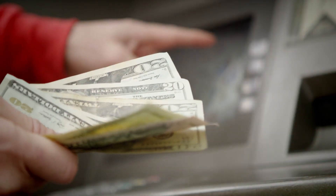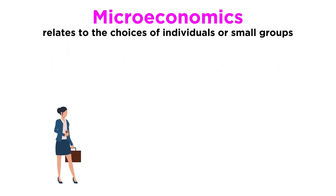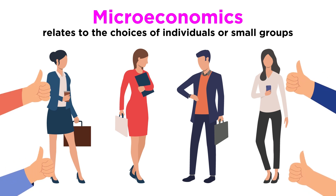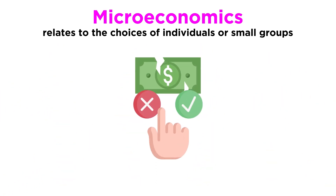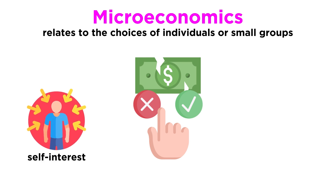So far in this series, we have been learning about microeconomics, which means we have been looking at the economy through the choices of individuals or small groups. Primarily, we have been examining how these choices can lead to positive results. Most of what we know about choices that are based on scarcity points to the idea that they are based on self-interest, and therefore the more freedom we have to make choices, the better off we will be.